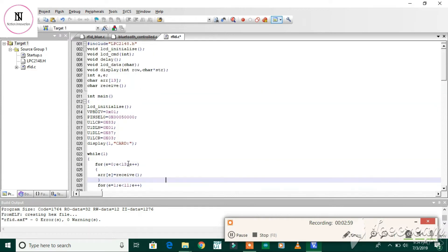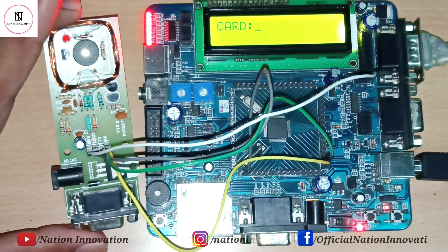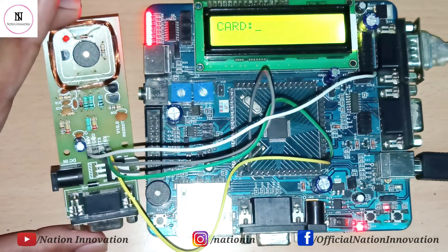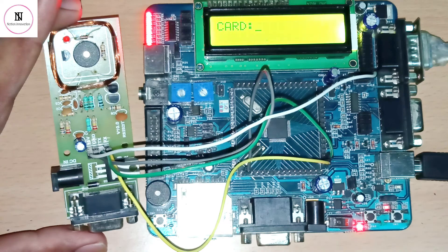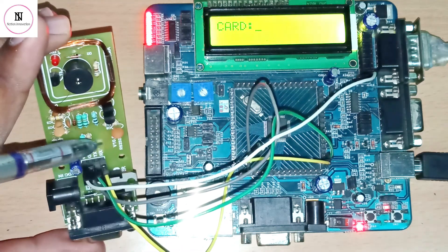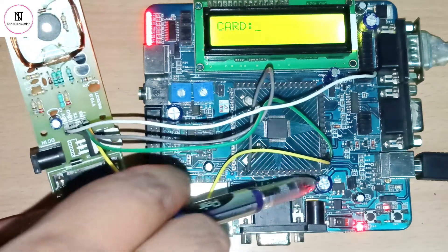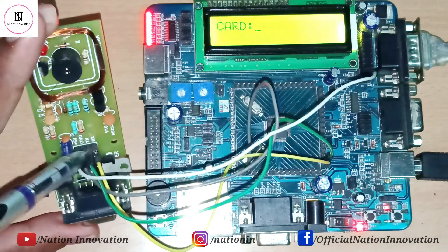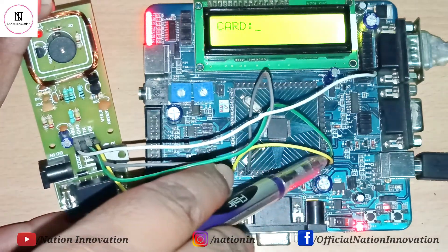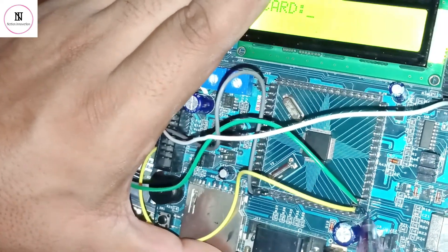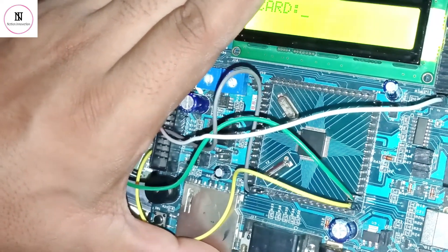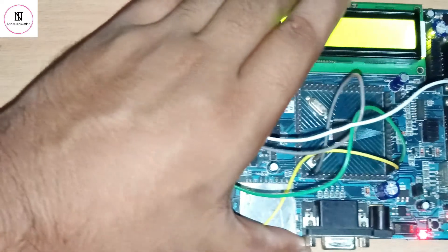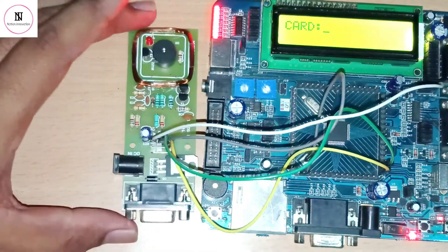We have programmed our ARM7 microcontroller for RFID interfacing. The receiver module of the RFID is connected to the transmitter of the ARM7 microcontroller, and the transmitter module is connected to the receiver. These are the receiver and transmitter of UART1 on the ARM7 board.